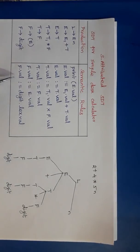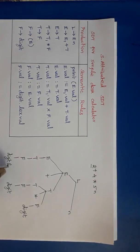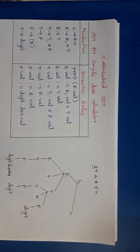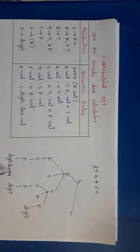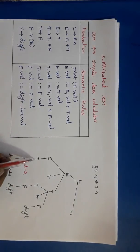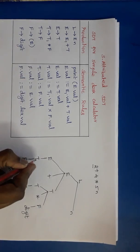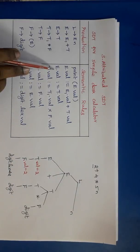Now we use the semantic rules to evaluate. F tends to digit: digit.lexval = 2 (taken from symbol table), so F.val = digit.lexval = 2. Then T tends to F: T.val = F.val = 2. Then E tends to T: E.val = T.val = 2. For the next digit, digit.lexval = 4, so F.val = 4, T.val = F.val = 4.